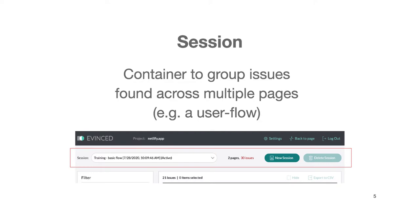Let's start with sessions. As we discussed in the basic flow video, at a high level, a session is a container for you to group together issues found across multiple pages. It's a tool you can use in order to model a user flow or a specific version. Usually, you would want to create a report for more than just a single page — it could be for a portion of your web application that comprises multiple pages. That's why we created the concept of a session.